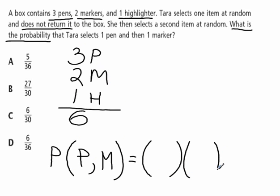Let's look at our individual probabilities first. We'll have two events. Probability of selecting a pen. She has three pens out of a total of six items. So the probability will be three out of six, which by the way is equivalent to one half.